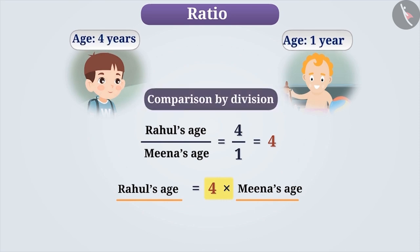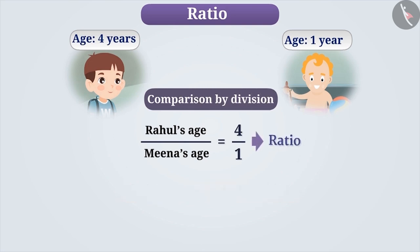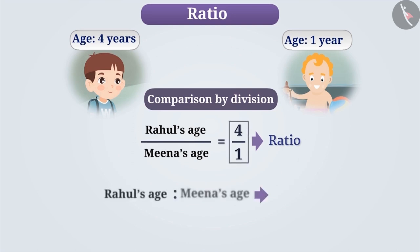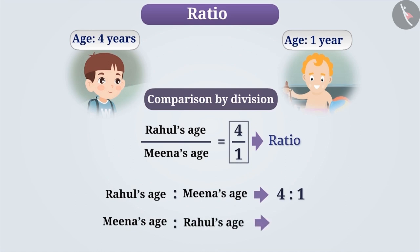The method in which we compare two quantities in terms of how many times is known as comparison by division. In this example, year is used as the unit of age, so the units of both quantities are the same. When the units of two quantities are the same, the comparison by division is known as ratio. Therefore, Rahul's age to Meena's age is a ratio represented as 4 is to 1. Similarly, the ratio of Meena's age to Rahul's age is 1 is to 4. We denote ratio by the symbol colon to compare two quantities.